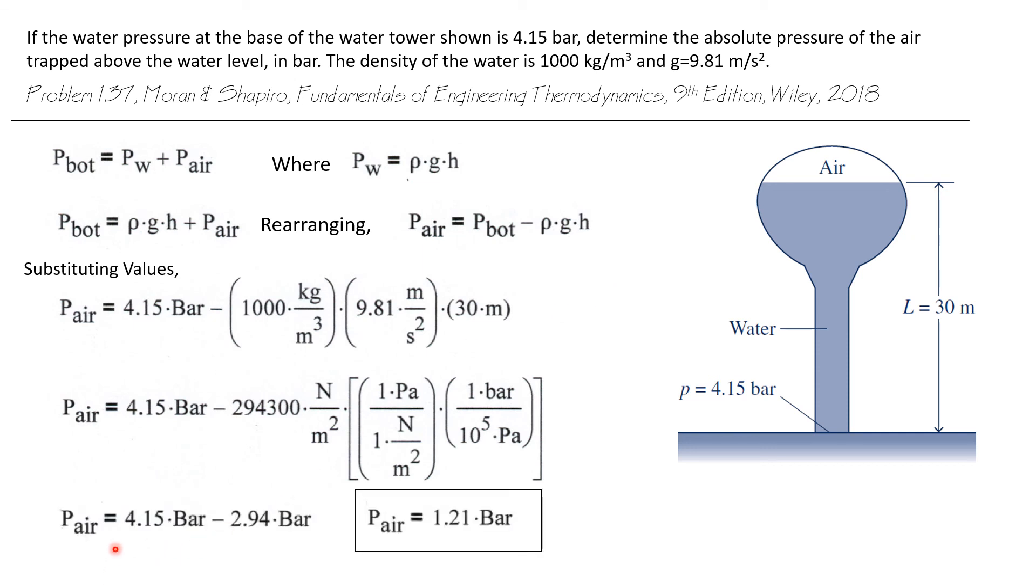So we now have that the pressure of the air is 4.15 bar minus the result of this unit conversion, which is 2.94 bar. And we calculate that the pressure of air trapped above the water is 1.21 bar.